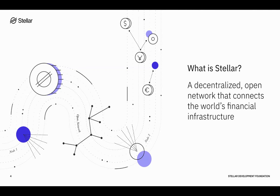So first, what is Stellar? Stellar is a decentralized open network that is really designed to connect the world's financial infrastructure. It does this by allowing individuals and institutions connected to that existing financial infrastructure to transact on Stellar peer-to-peer and seamlessly exchange value between all types of money and across any payment network. In short, Stellar is a global public blockchain built for interoperability and to further financial access and inclusion. Note that Stellar is free to access and near free to use, and it is also open source.